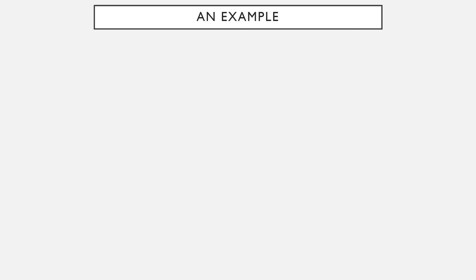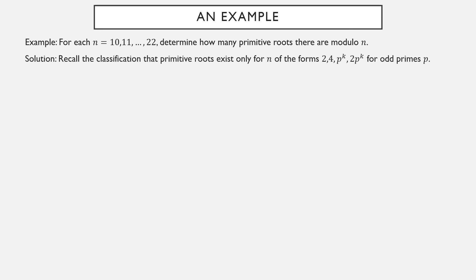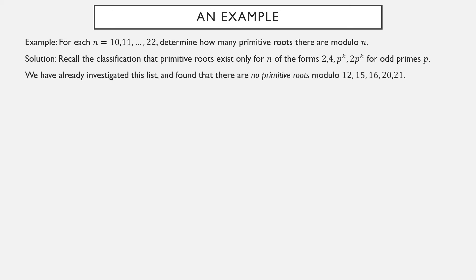For each n from 10 to 22, determine how many primitive roots there are modulo n. Remember, we've classified which bases have primitive roots: 2, 4, an odd prime to a power, or 2 times an odd prime to a power. We already investigated that list and saw that 12, 15, 16, 20, and 21 don't have primitive roots at all. 12 is 4 times an odd prime power; 15 has two distinct odd prime factors; 16 is a power of 2 that wasn't 2 or 4; 20 is an odd prime power times 4, not times 2; and 21 has two distinct odd prime factors. So these numbers don't have primitive roots at all.